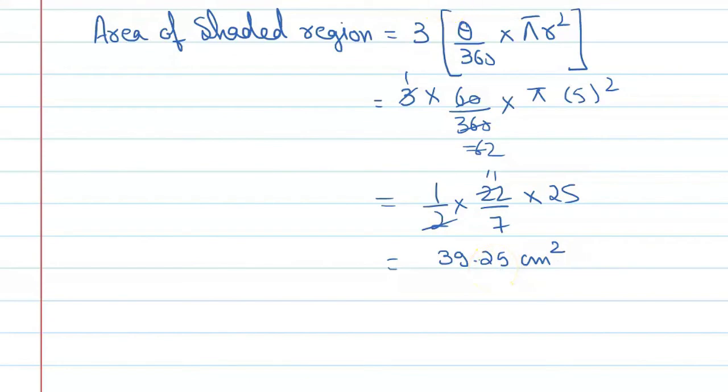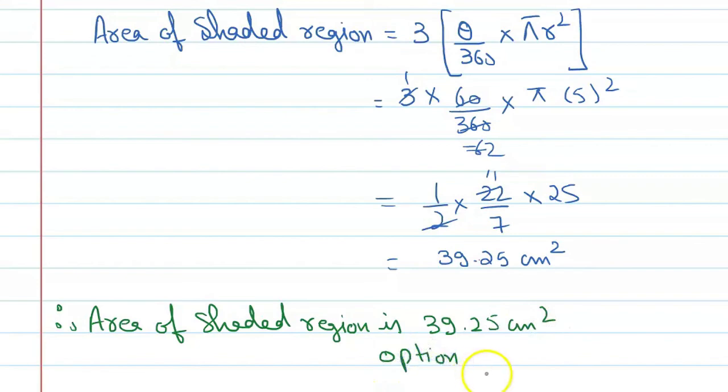So the final answer is area of shaded region is 39.25 centimeter square, and the correct option is B.